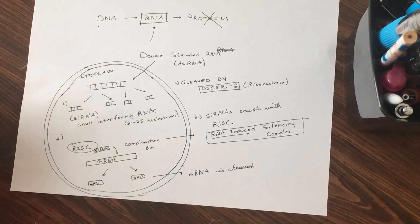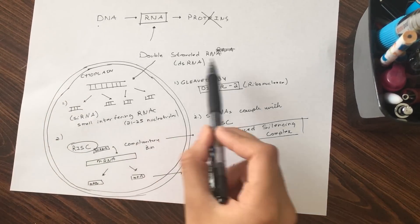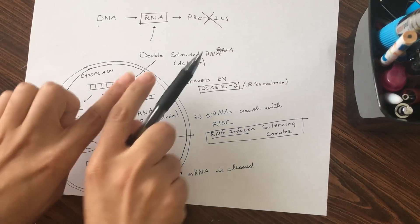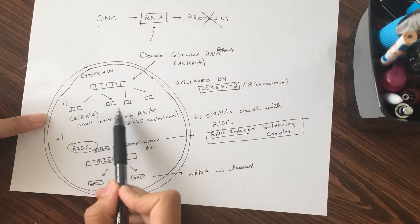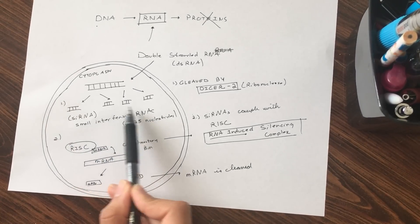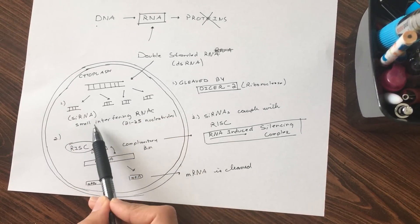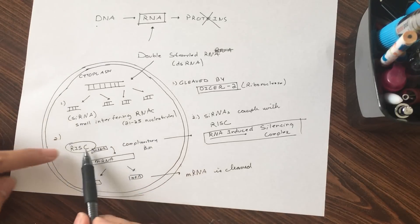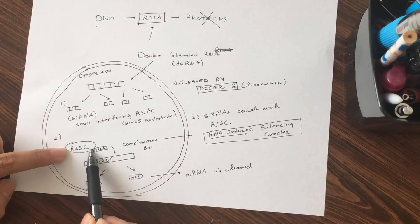Now let's go through it one more time so you understand. You have this double-stranded RNA come into the cell. Then you have DICER2 ribonuclease which cleaves this double-stranded RNA into small interfering RNA molecules. These siRNAs interact with this RNA-induced silencing complex.